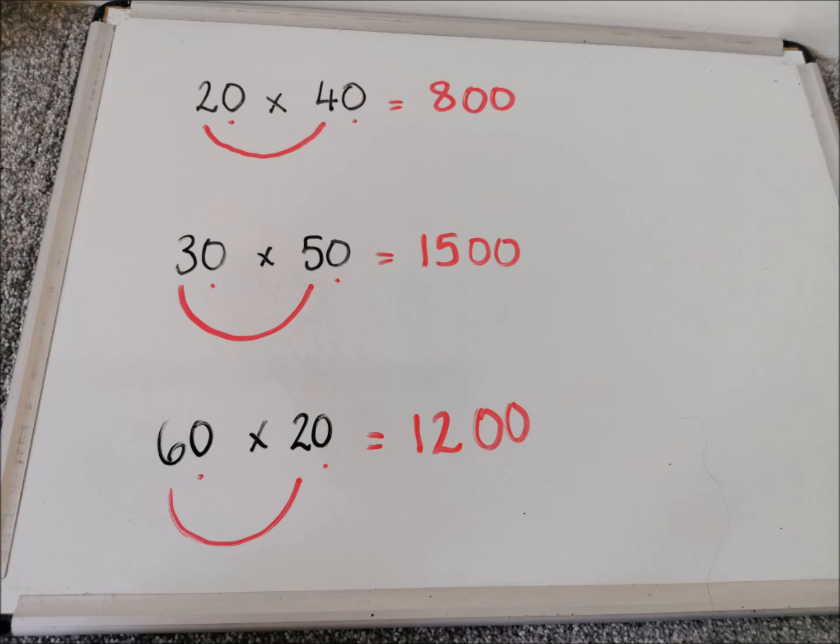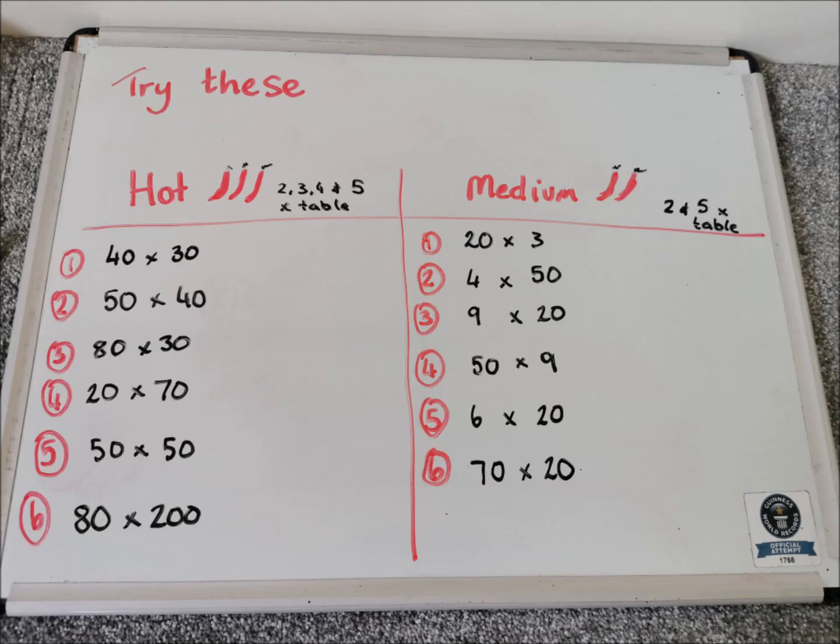So I've got some questions that we can have a go. I've got some hot and I've got some medium questions. The hot questions today are the 2, 3, 4 and 5 times table. And the medium is focusing just on the 2 and the 5 times table. So you can decide what ones you want to do or you can do both of them.